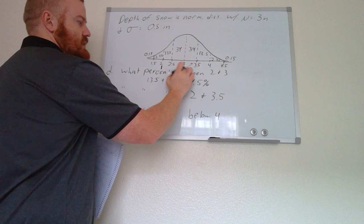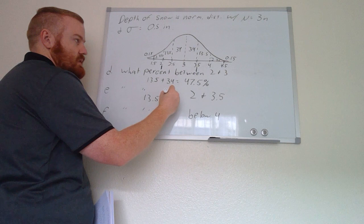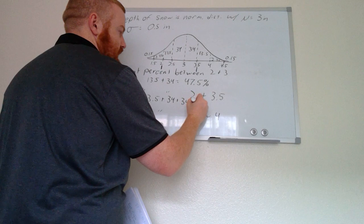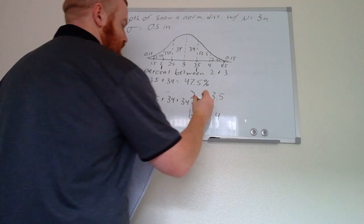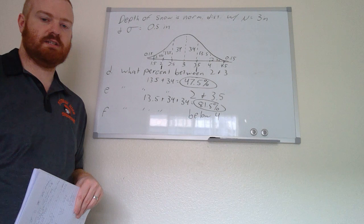For the percent between 2 and 3.5 inches: add 13.5% (2 to 2.5) + 34% (2.5 to 3) + 34% (3 to 3.5) = 81.5%. So 81.5% of values fall between 2 and 3.5 inches of snow.